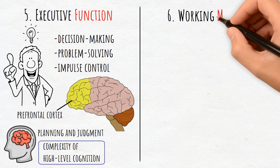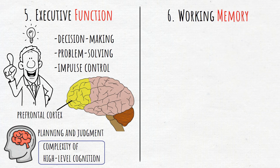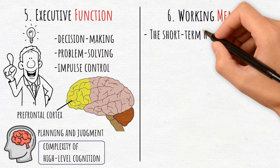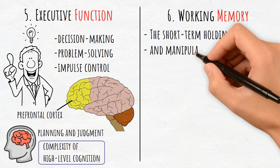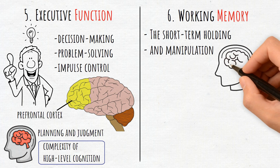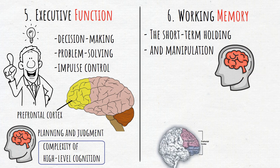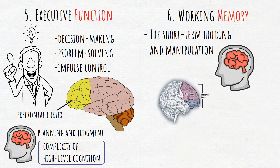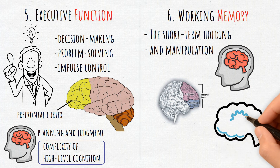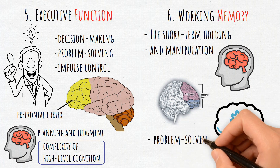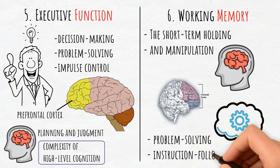6. Working Memory. The short-term holding and manipulation of information are crucial for reasoning. Damage to the dorsolateral prefrontal cortex impairs working memory, affecting tasks like problem solving and instruction following.